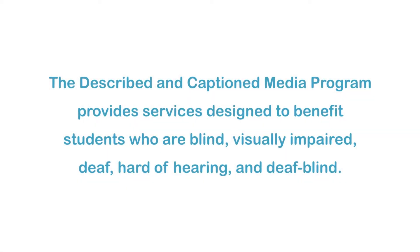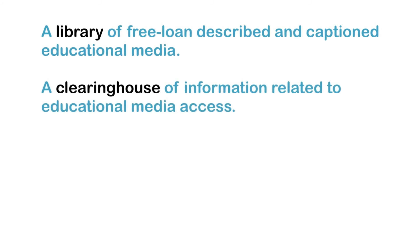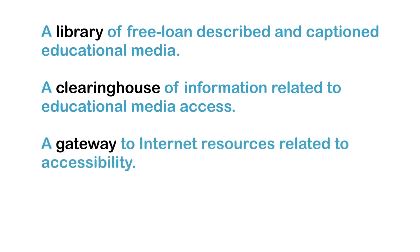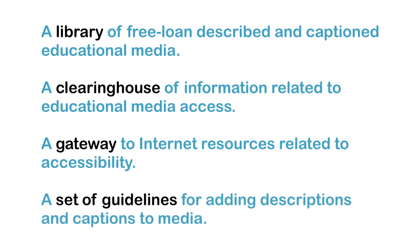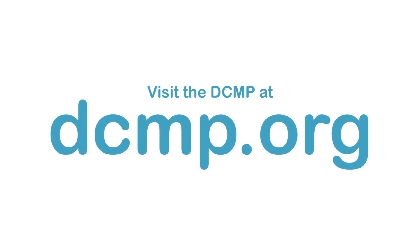The Described and Captioned Media Program provides services designed to benefit students who are blind, visually impaired, deaf, hard of hearing, and deafblind. These services include a library of free loan-described and captioned educational media, a clearinghouse of information related to educational media access, a gateway to Internet resources related to accessibility, and a set of guidelines for adding descriptions and captions to media. There are no user registration or service fees. Visit the DCMP at dcmp.org.